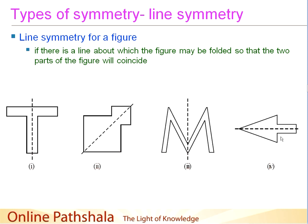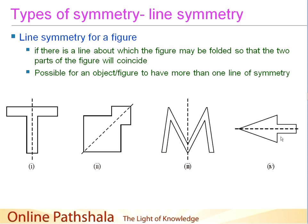We have discussed what line symmetry means and reiterated what a line of symmetry is. One important thing to keep in mind is that it is possible for an object or figure to have more than one line of symmetry. All four figures we examined each had one line of symmetry, meaning there is just one line along which folding makes the parts coincide. It is quite possible to have a figure through which we can identify multiple lines along which the figure exhibits symmetry.